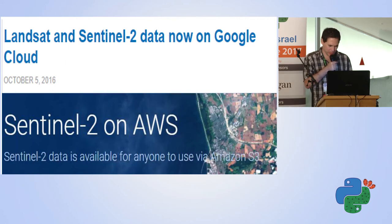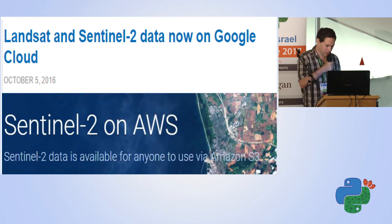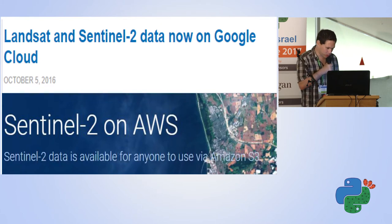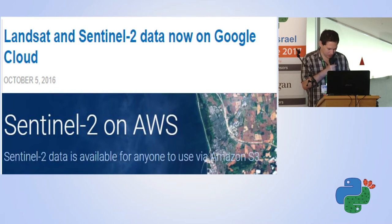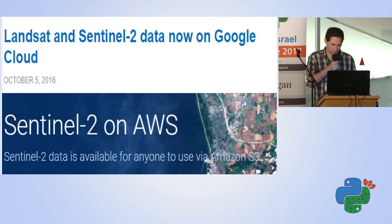Sentinel-2 is from the European Space Agency. It was launched about a year and a half ago and has a resolution of 10 meters, with a revisit time of every 10 days — soon to be five days when both active satellites are in orbit. You can download the data from the Copernicus site; all data is free for any use. Many startups and companies make use of it. You can also download Landsat and Sentinel-2 data from Google Cloud or Amazon Cloud.